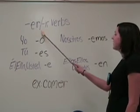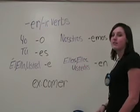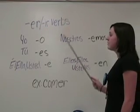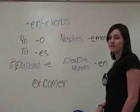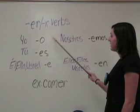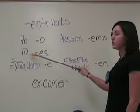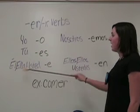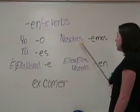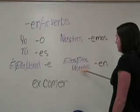Now let's move on to the ER and IR verbs, which are infinitive verbs that end in ER and IR. These verbs have the same endings when doing the present tense. The respective endings are: O for yo, ES for tú, E for él, ella, usted, AMOS for nosotros, and N for ellas, ellos, ustedes.